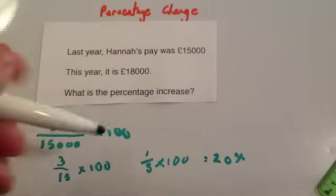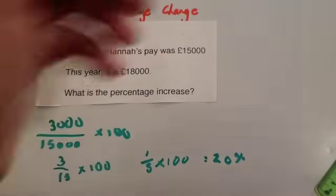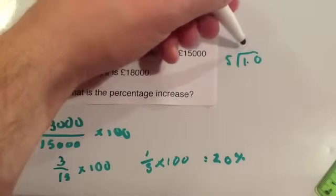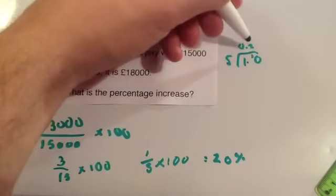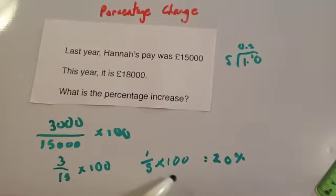Alternatively, here you could have done 1 divided by 5 using the bus shelter method. So 1 divided by 5. And then you would have got 0.2. So 0.2 times 100 is 20% as well.